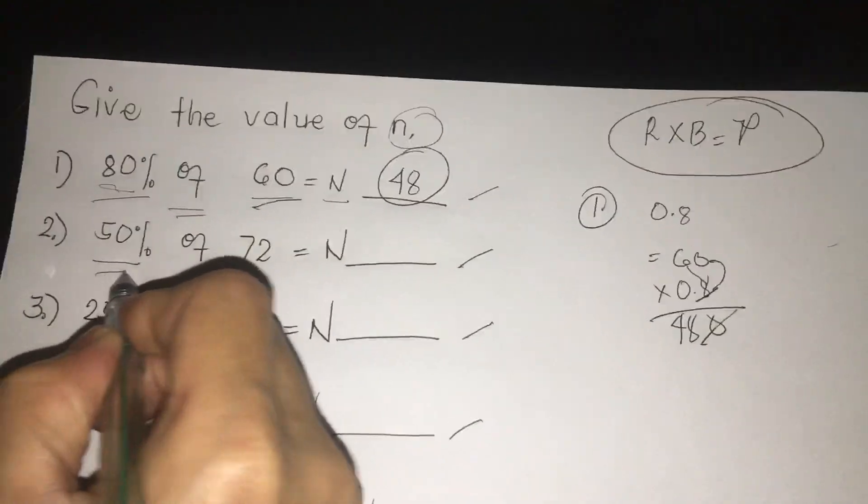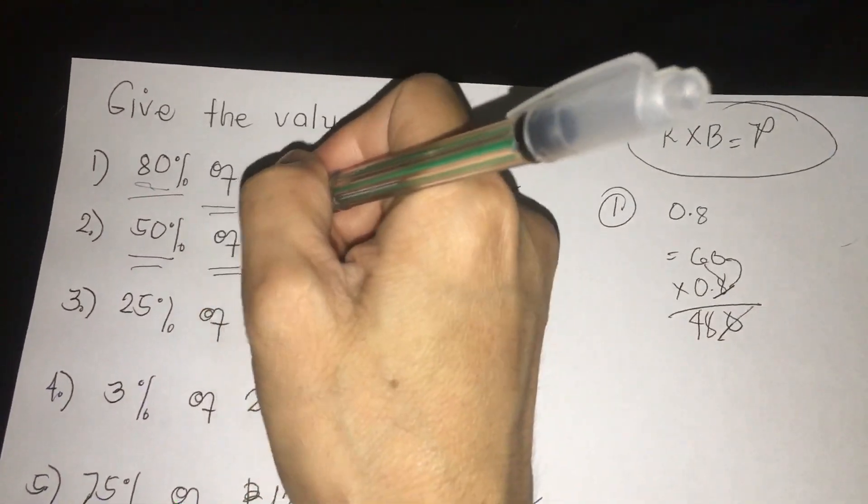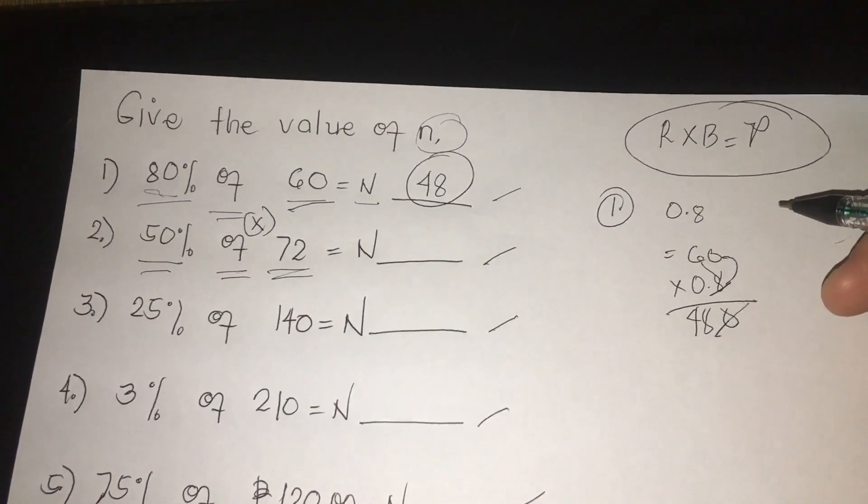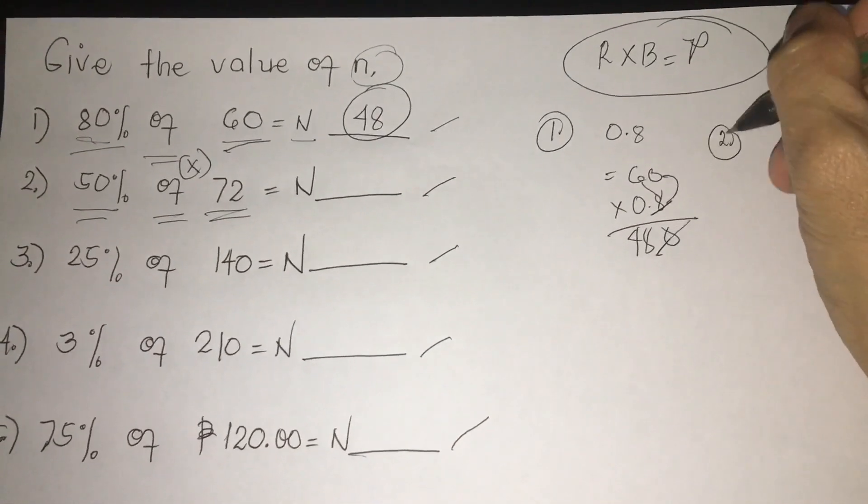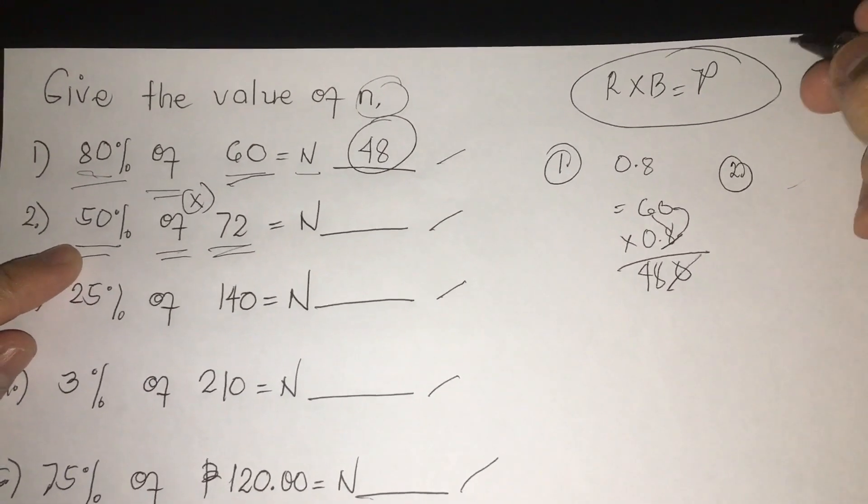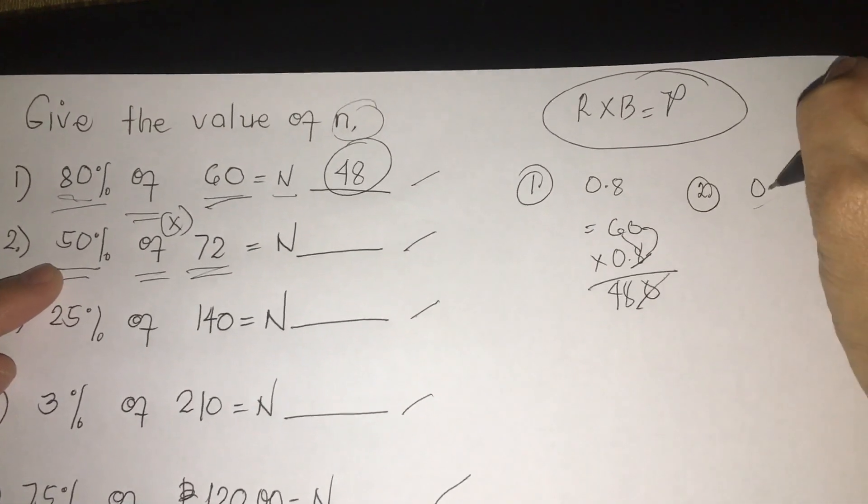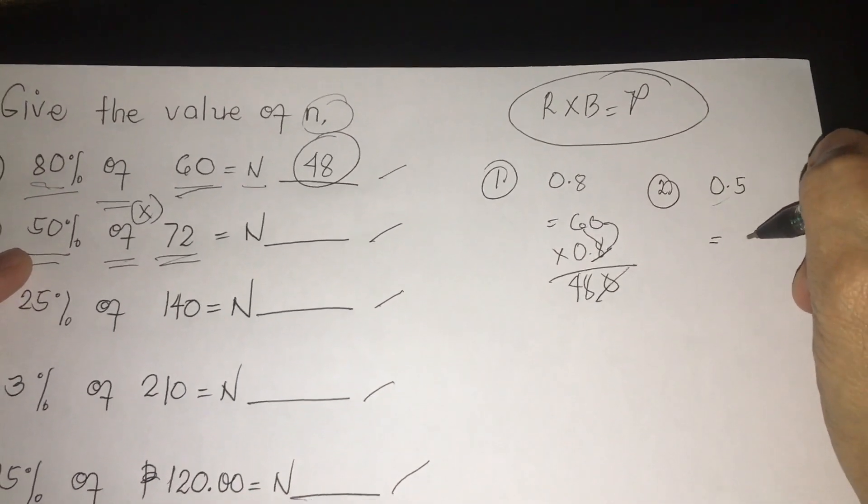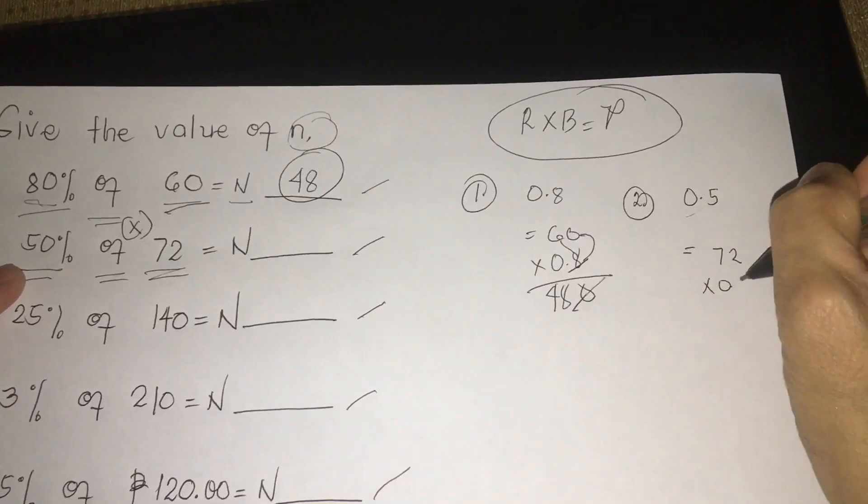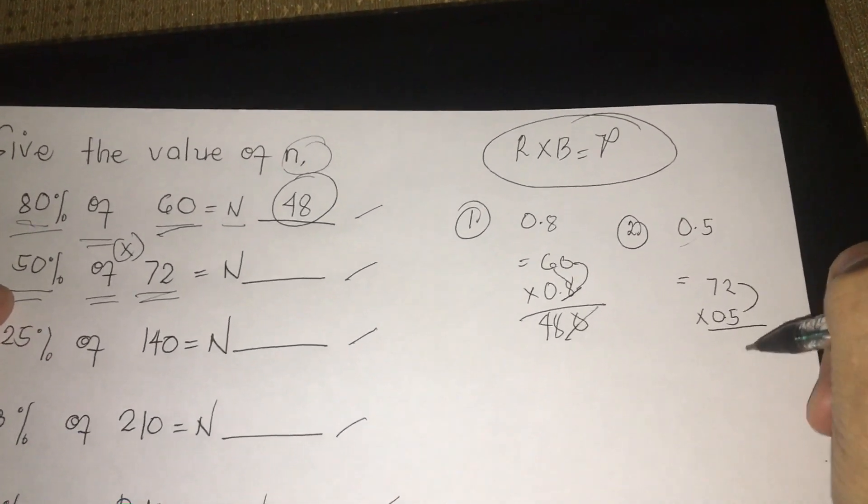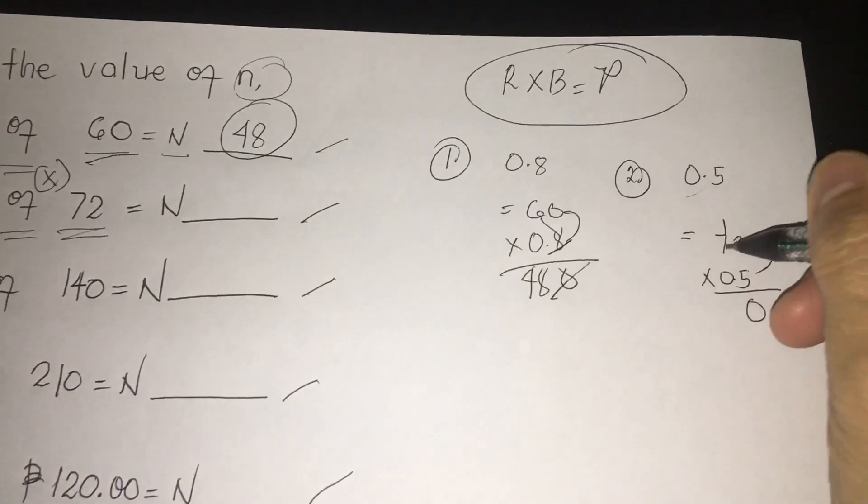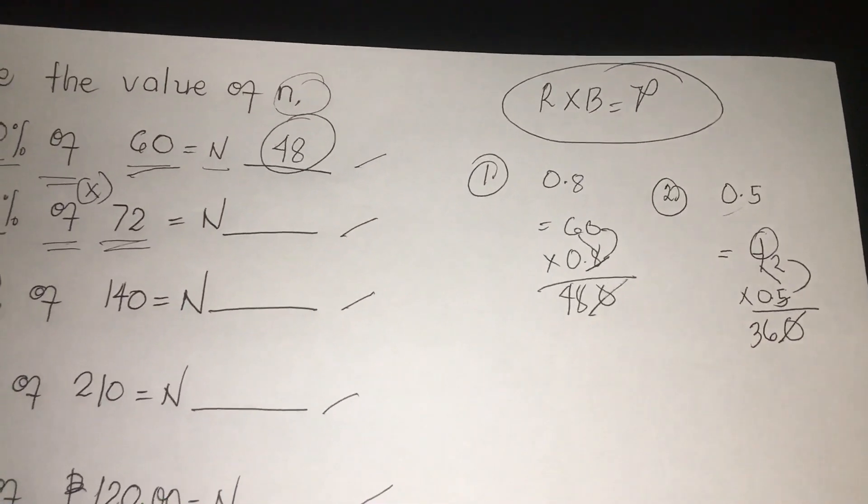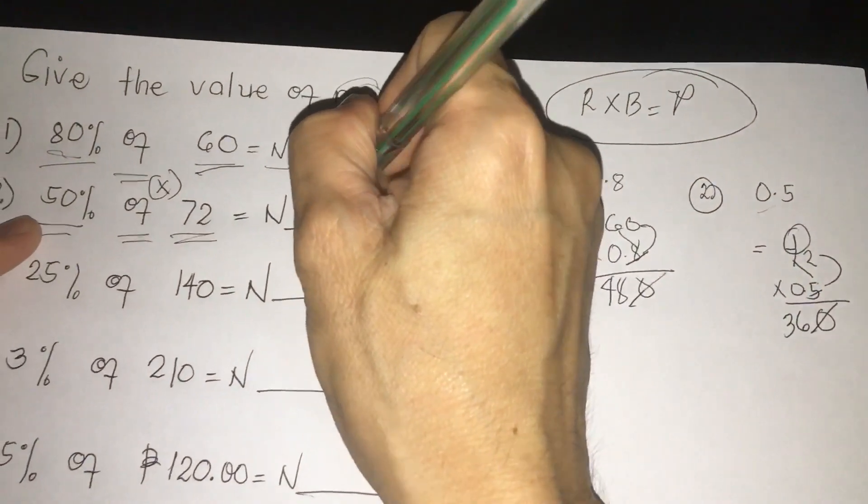Number 2: 50% of 72. Remember, 'of' means multiplication. You are going to multiply it. So same procedure: percent to decimal. So we have 50%, so we have 0.5. So we are going to write 72 times 0.5. 2 times 5, viewers, we have 10, regroup 1. 7 times 5 is 35, plus 1 is 36. So we're going to cancel first. Our answer is 36.